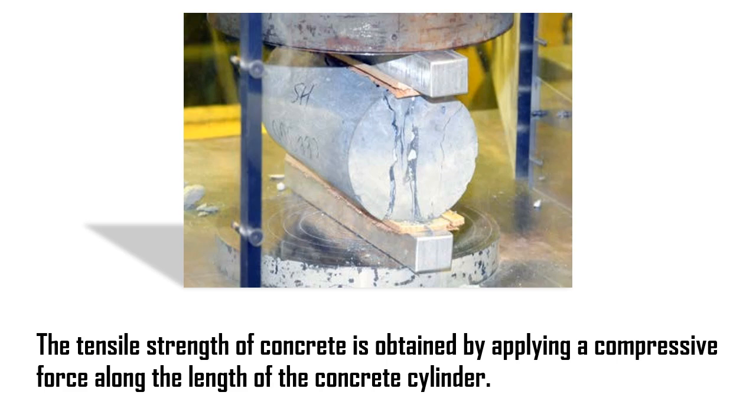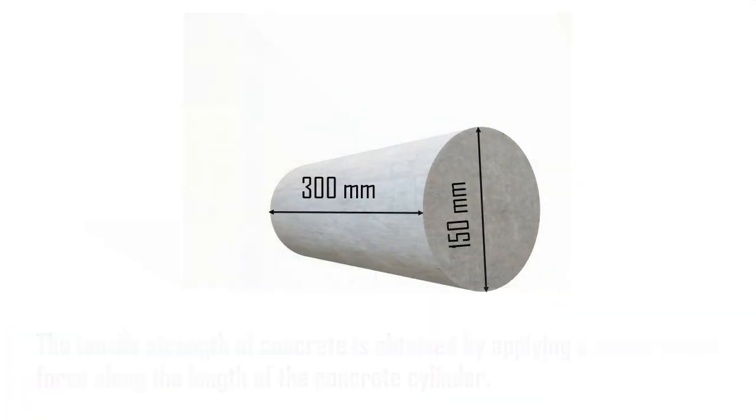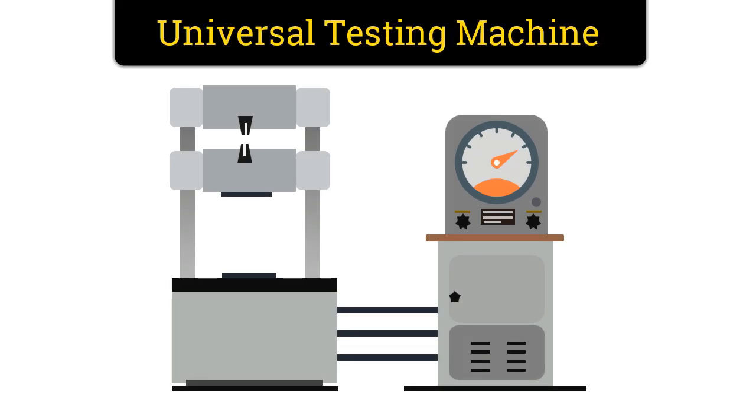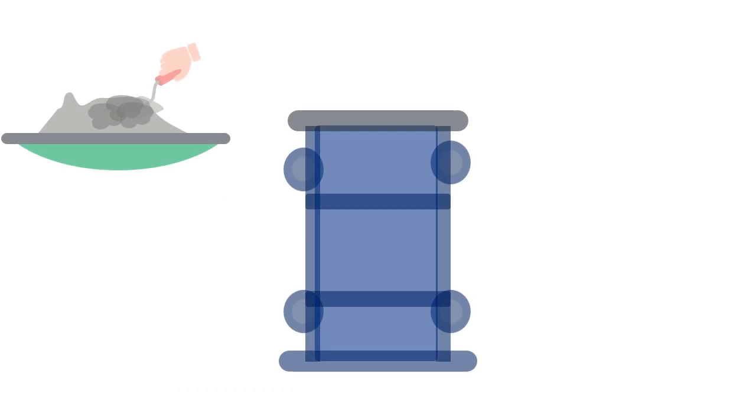The specimen used for this method is cylindrical in size with dimensions of 150 millimeters in diameter and 300 millimeters in length. The instrument used for this method is the universal testing machine.